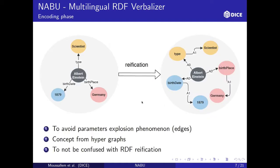Let's unpack NABU's architecture. In the encode phase, on the left side we have the original subgraph, and then we apply a reification strategy — this should not be confused with RDF reification. This strategy uses a hypergraph concept. We created a hypergraph from the original graph to avoid the parameter explosion phenomenon found in graph-based neural architectures. The edges become parameters in graph neural-based models, and when we have a large number of relations — meaning edges — we have the parameter explosion problem. To avoid this, we relied on this reification strategy.